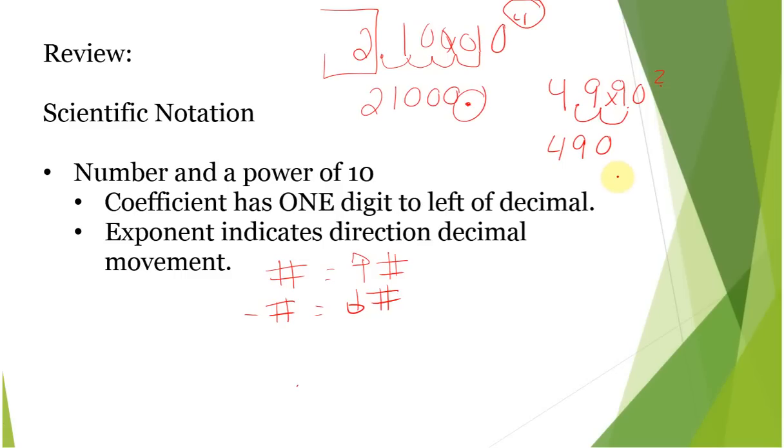Where we had something like 7.1 times 10 to the negative 3, here we're going to move in the opposite direction because this negative indicates it's a small number, smaller than 1. Fill in with zeros. So this is 0.0071.